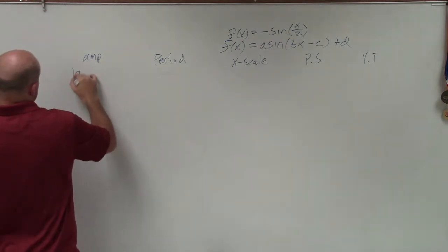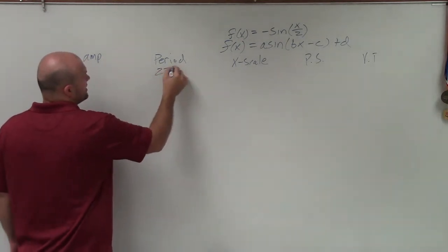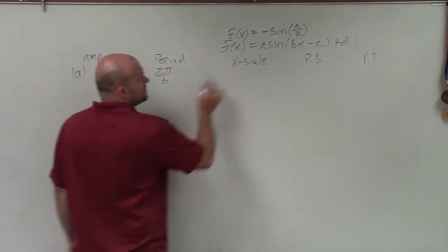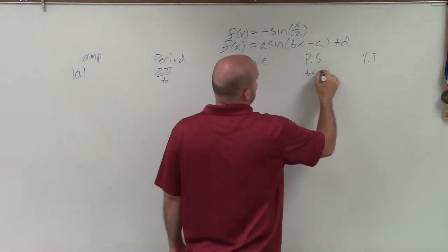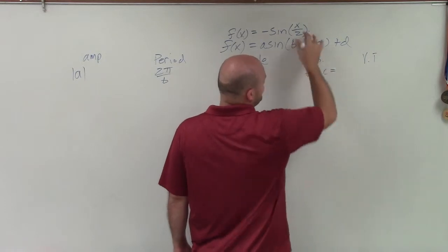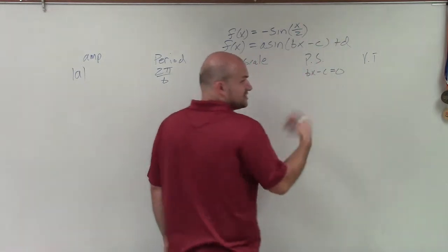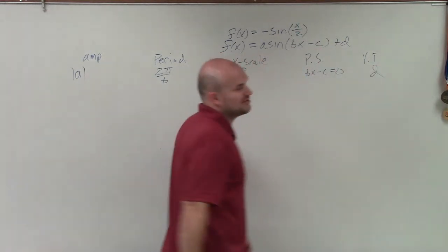So to determine the amplitude, I'm just going to take the absolute value of a. To determine the period, I take 2 pi divided by b. To determine the x scale, I take my period divided by 4. To determine my phase shift, I take whatever's inside my function, set it equal to 0, and solve. And my vertical transformation is d.